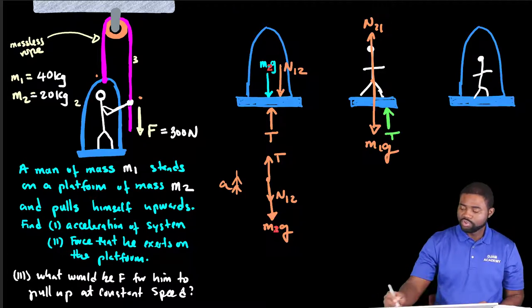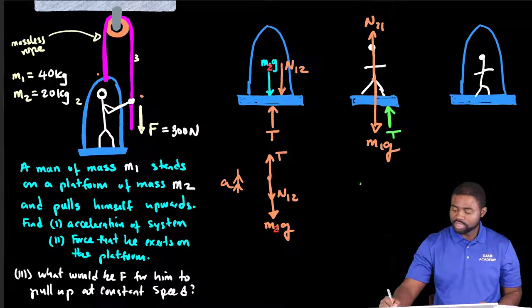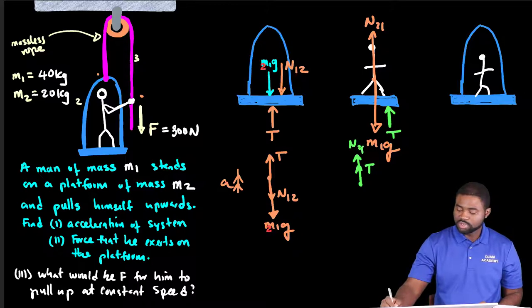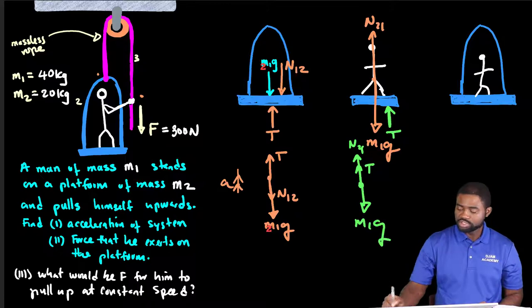So in the free body diagram for the man, we have two forces pointing upwards: the tension T and the normal force N21. And we have one force downwards, which is M1G.